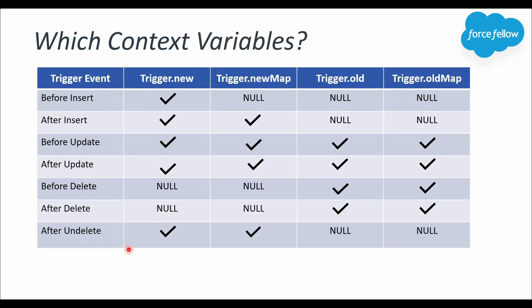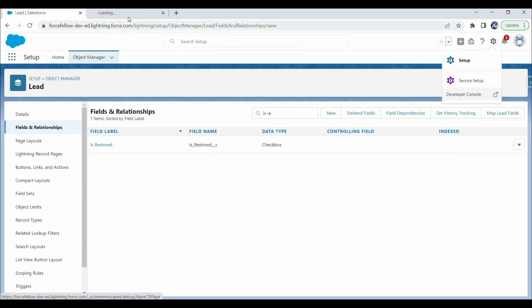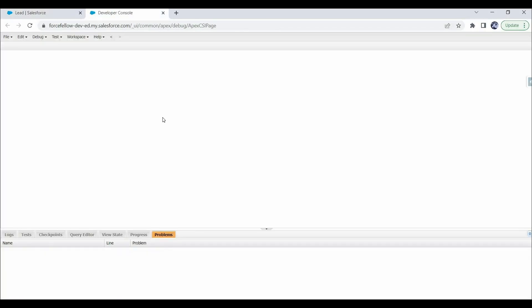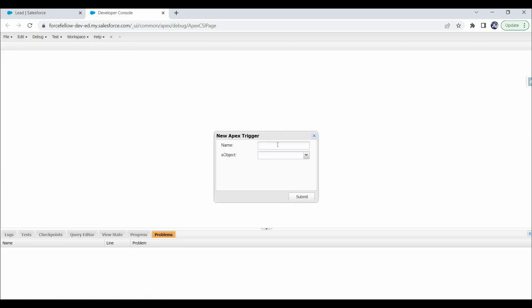If you get confused about which trigger events to use, you can refer to the reference table or watch my first video of this series where I have explained all of these in detail. Now, considering all these points, let's move into practical implementation and open our preferred IDE — I'll go with Developer Console. Here, first let's create a trigger on the Lead object: click File, then New, then Apex Trigger, and provide Lead Trigger as the trigger name and select Lead as the object.